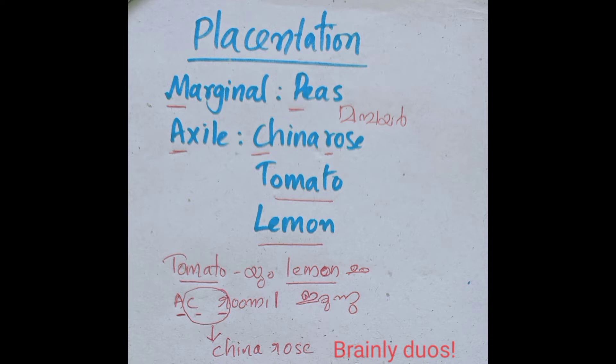The next thing is axial placentation. Axial placentation is the example of China rose, tomato, lemon. The code is tomato and lemon.